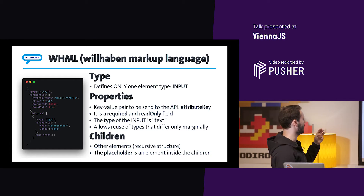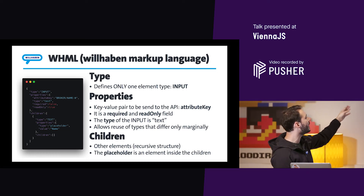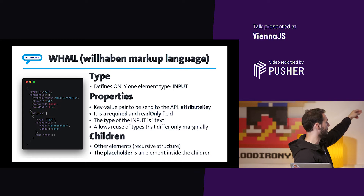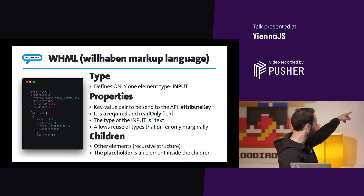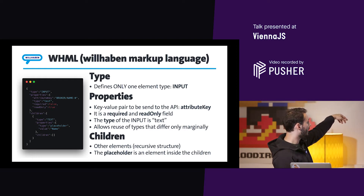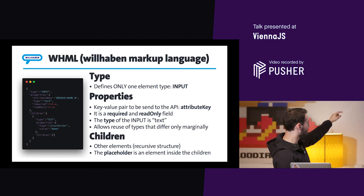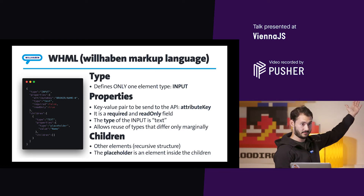Every node of our WHMML — the Wilhelm Markup Language — has three main properties. One is type, which defines the element type; in this case it's an input. Properties is a key-value pair; for example, the key-value pair to be sent to the API is called attribute key — in this case it's broker's last name, meaning it's a read-only field and the type is text. These things allow reuse of types that differ only marginally. And you have children, which is a recursive structure — you can have several children, and children can have different children. For example, one child is the placeholder of the input.